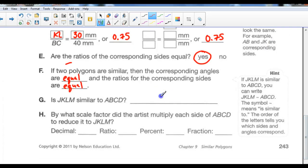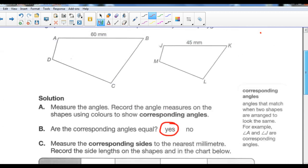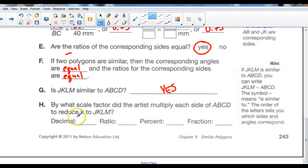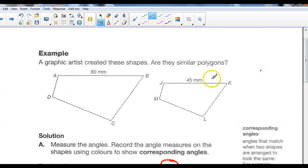Is JKLM similar to ABCD? The answer is yes, it is similar. By what scale factor did the artist multiply each side of ABCD to reduce it to JKLM? So reduced it, so he made it smaller. 0.75, or 0.75 to 1, and the percent is, he reduced it by 75%, or 75% out of 100, or by, he reduced it by 3 quarters. So that means that this polygon is 3 quarters the size of this polygon right here. It's 75% the size.